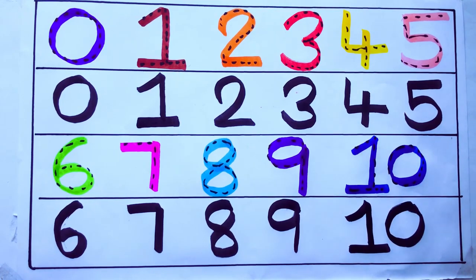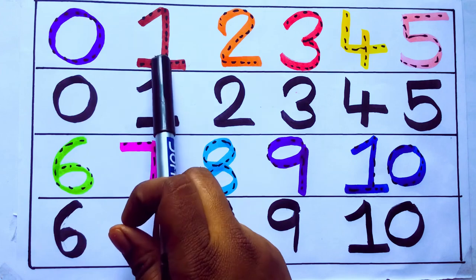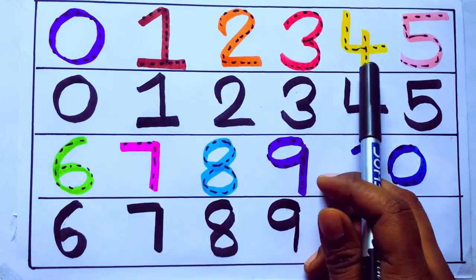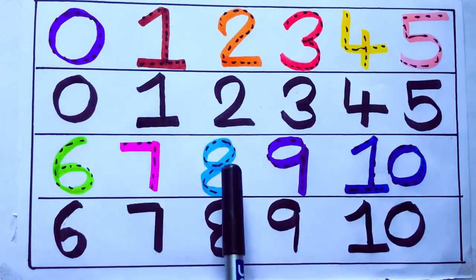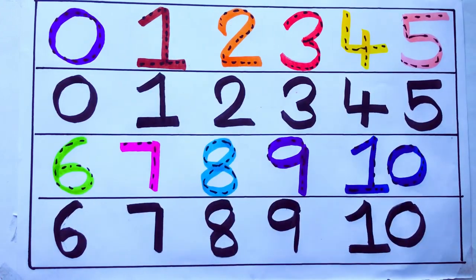Second learning numbers: 0, 1, 2, 3, 4, 5, 6, 7, 8, 9, 10. Okay.